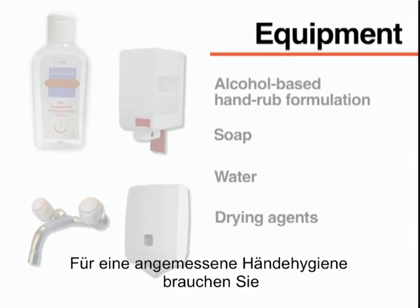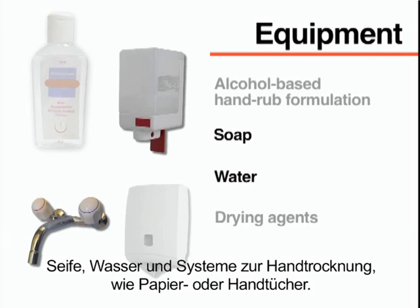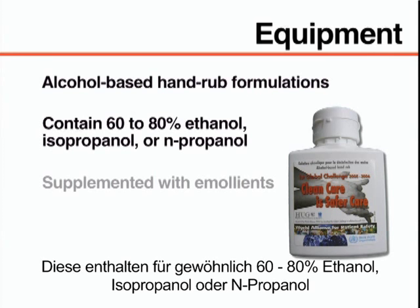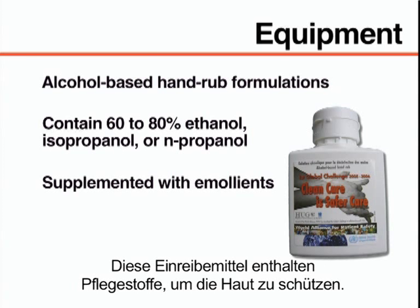To perform adequate hand hygiene, you will need an alcohol-based hand rub formulation or soap, water, and drying agents such as disposable paper or cloth towels. Use alcohol-based hand rubs with proven antimicrobial efficacy. These usually contain 60-80% ethanol, isopropanol, or n-propanol, or a combination of these products. These hand rubs are supplemented with emollients to protect the skin.